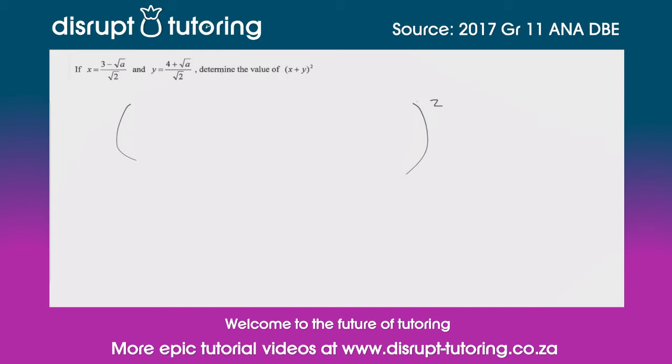So x here is (3 - √a)/√2, and we're adding (4 + √a)/√2.